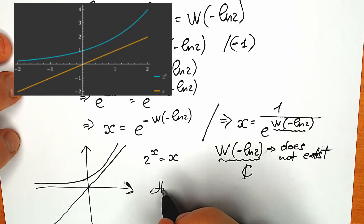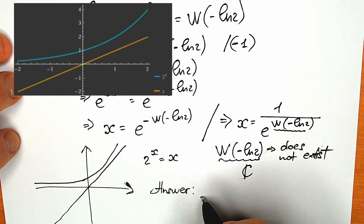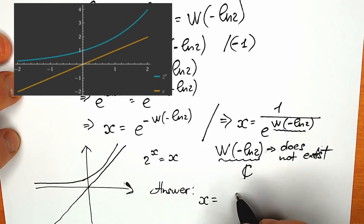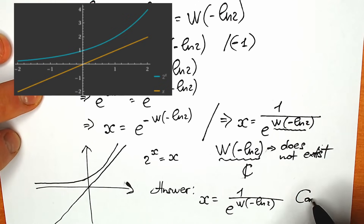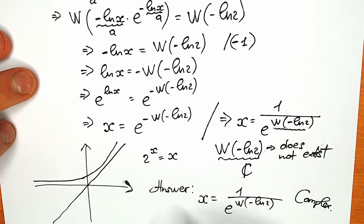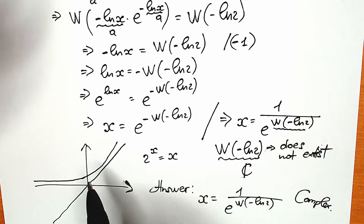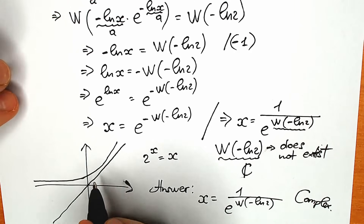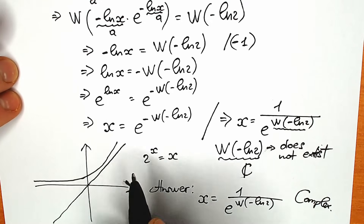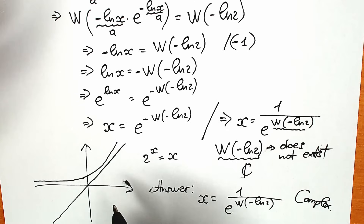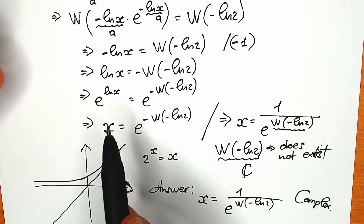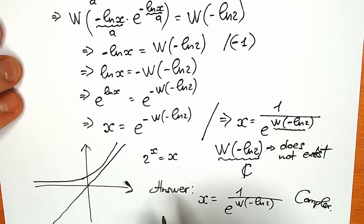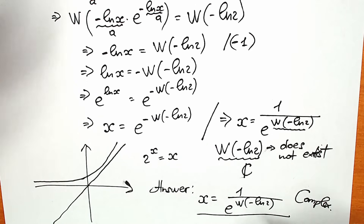Let's write our final answer: x equal to 1 over e to the power W of minus natural log 2. This root is a complex solution — there are no real roots to this equation and no points of intersection in terms of geometry. This is a great question for advanced students because it involves the Lambert W function with many properties and rules. I hope you understand and learned something new.